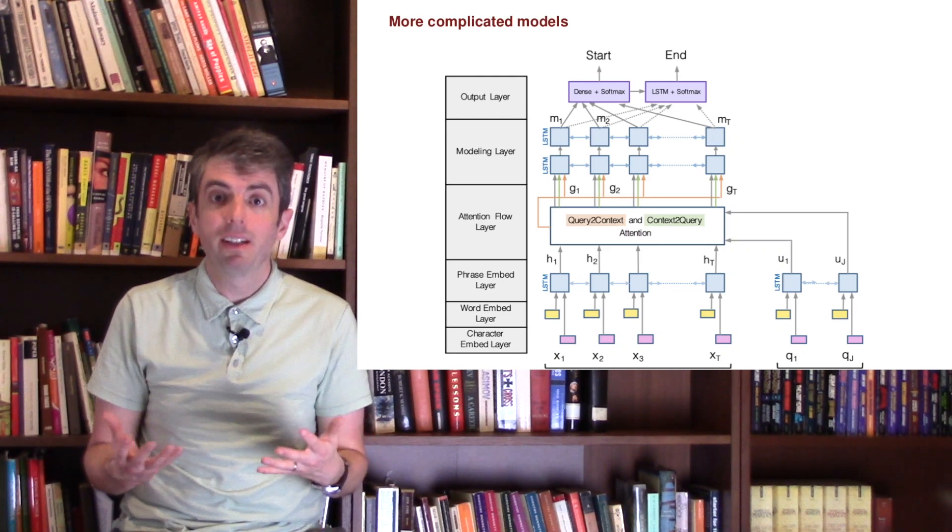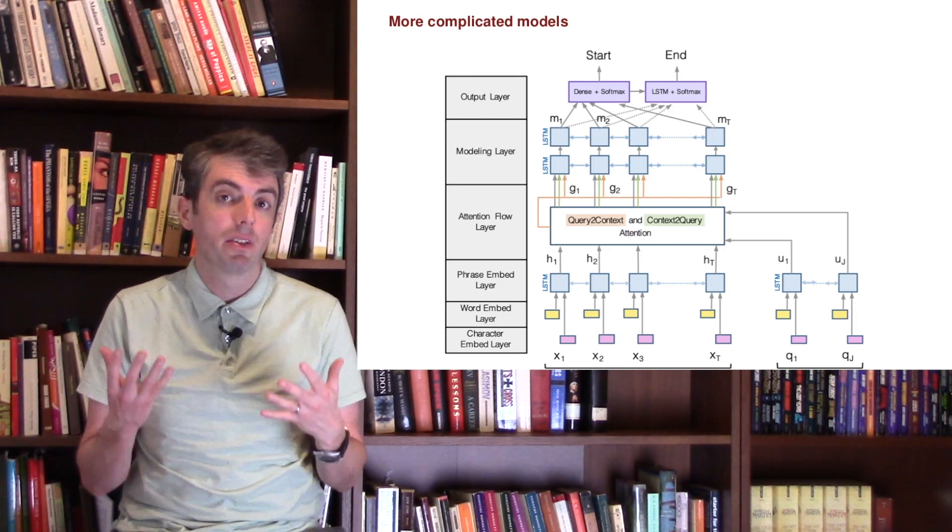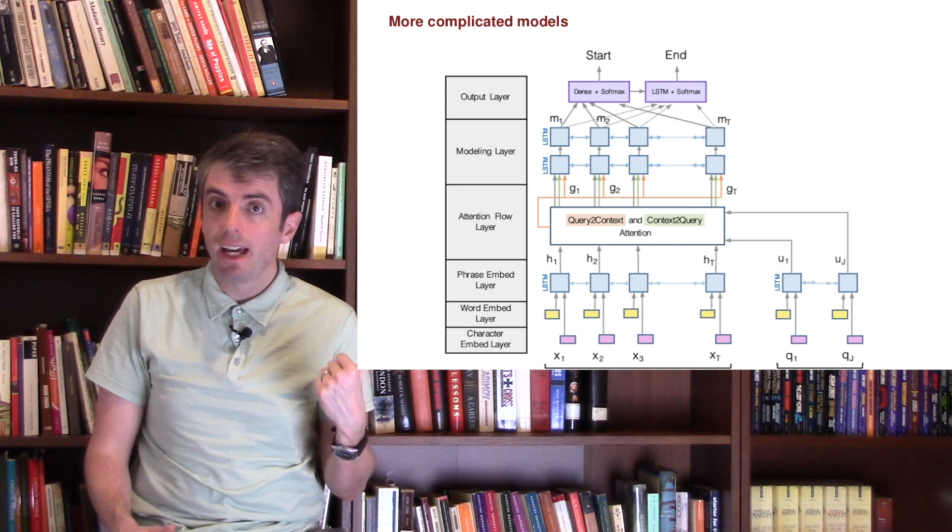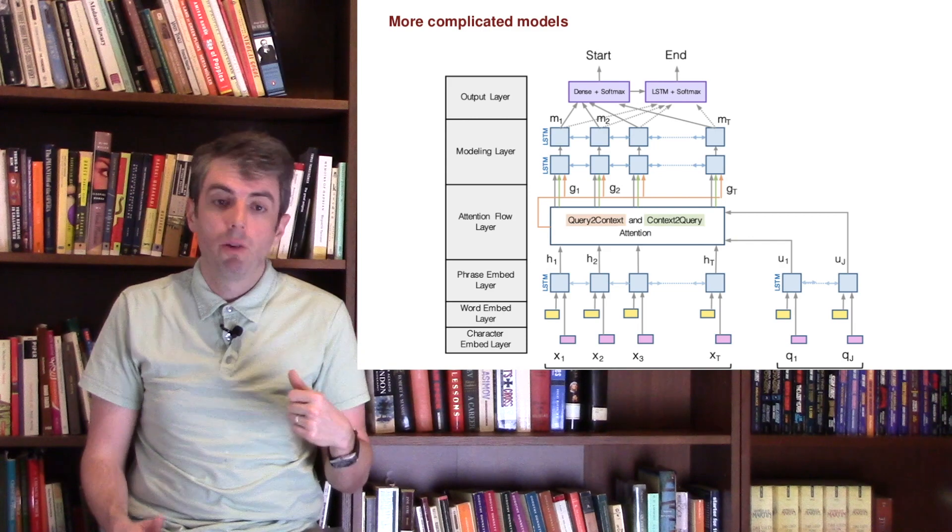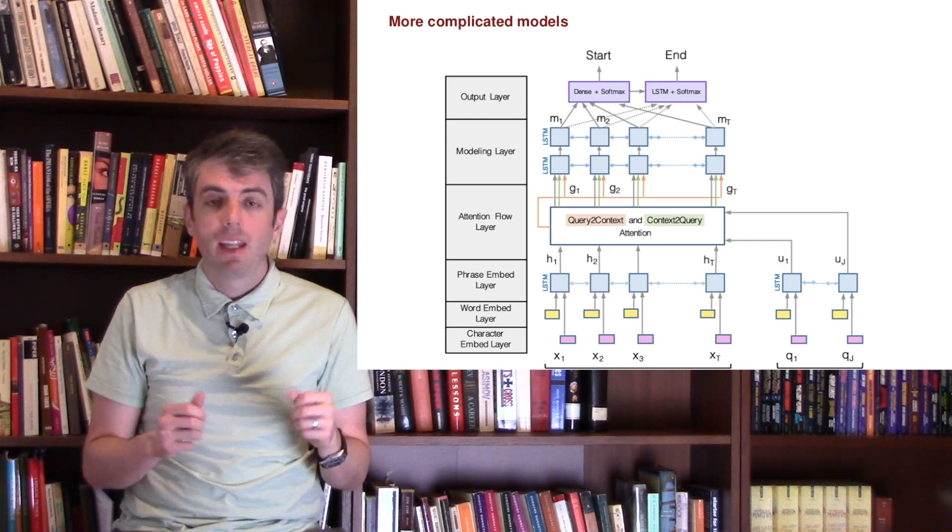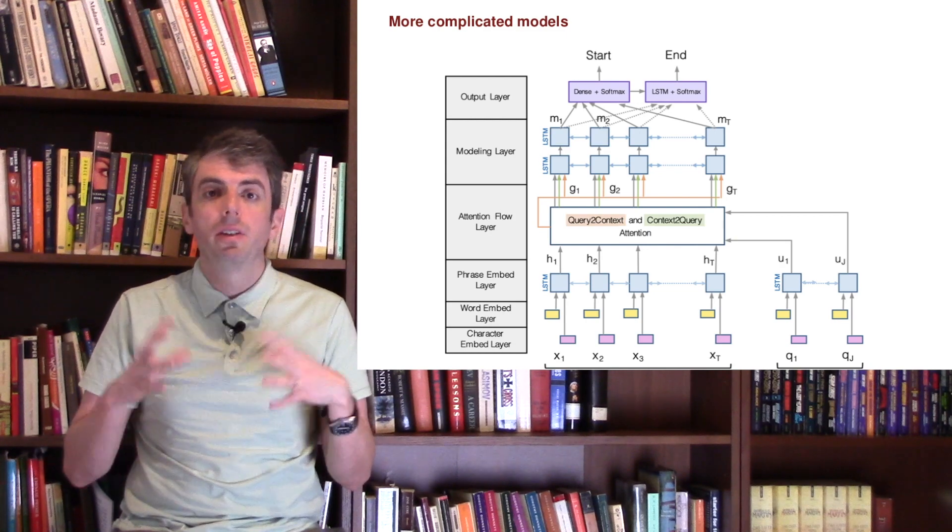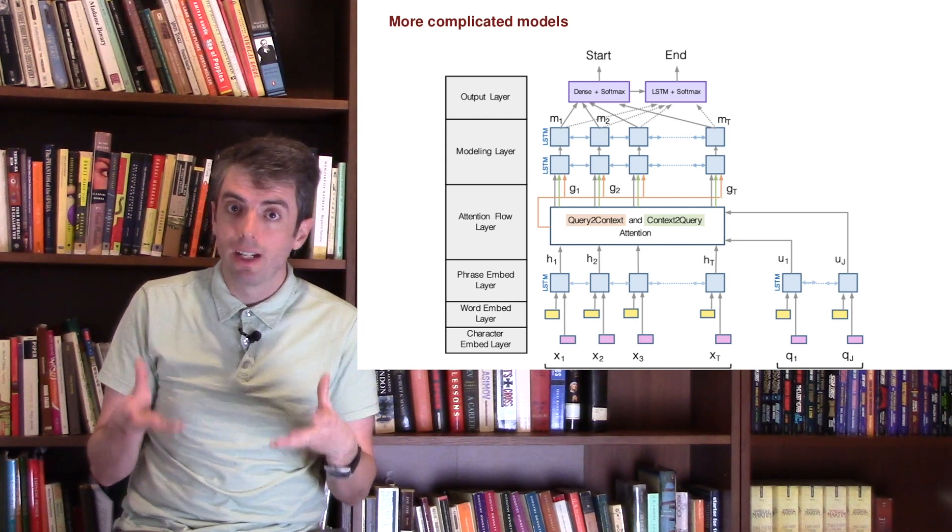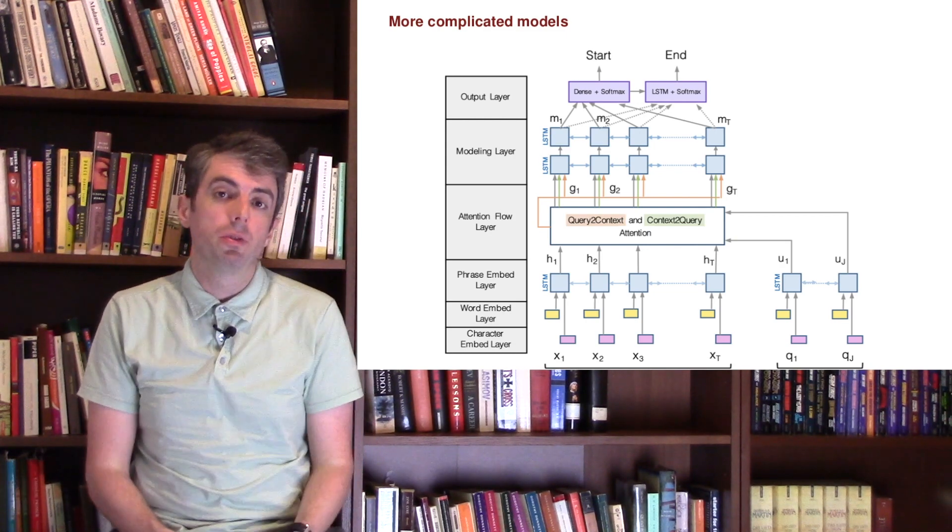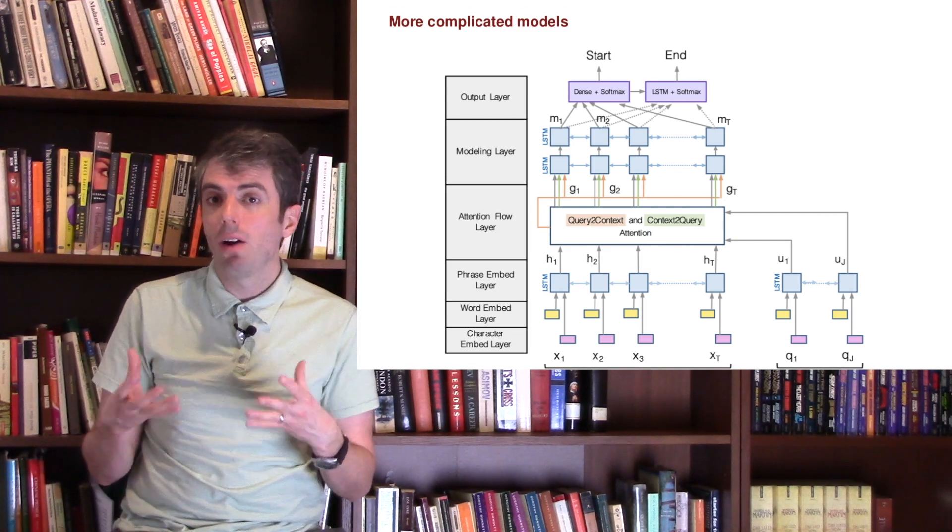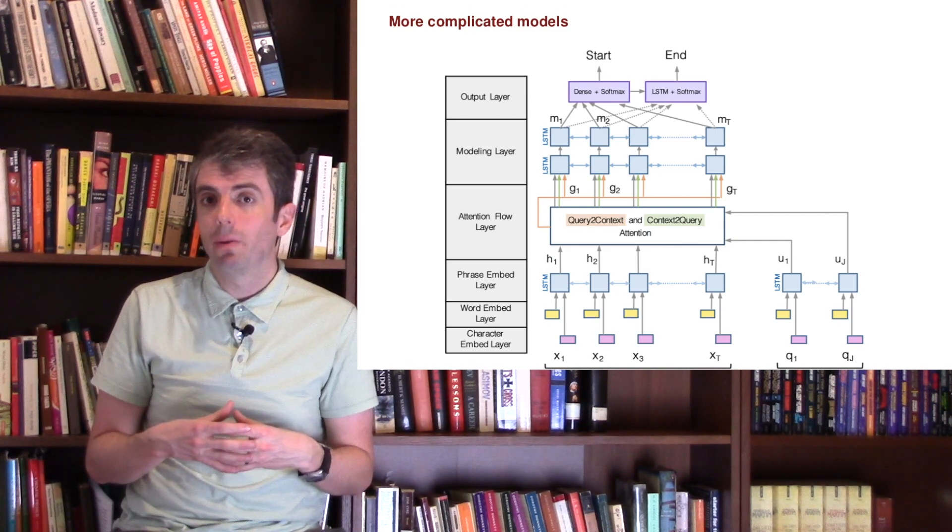There are, of course, more complicated models out there, and you should take a look at them to see if they're going to be useful for you. For example, AllenNLP has an implementation of BIDAF, which is a little bit more complicated. It still bears some family resemblance to DRQA, and you can use this relatively easily straight out of the box using the AllenNLP toolkit. I encourage you to try either of these out and see how well it does at answering questions.